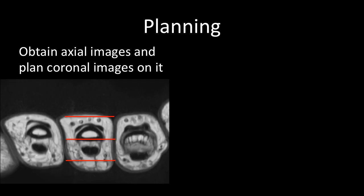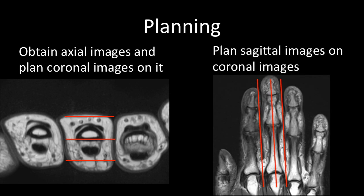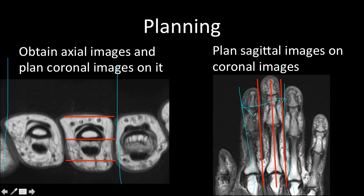For planning, first obtain the axial images and then plan the coronal on the axial images, exactly along or parallel to the shaft of the finger of interest. Once you have the coronal images, plan the sagittal images on the coronal images, again along the shaft of the finger of interest. Ideally, include an adjacent normal finger while planning — for coronal images include at least one or two adjacent normal fingers, and similarly for sagittal images. This is important because comparing with a normal adjacent finger helps reach a diagnosis for difficult injuries.